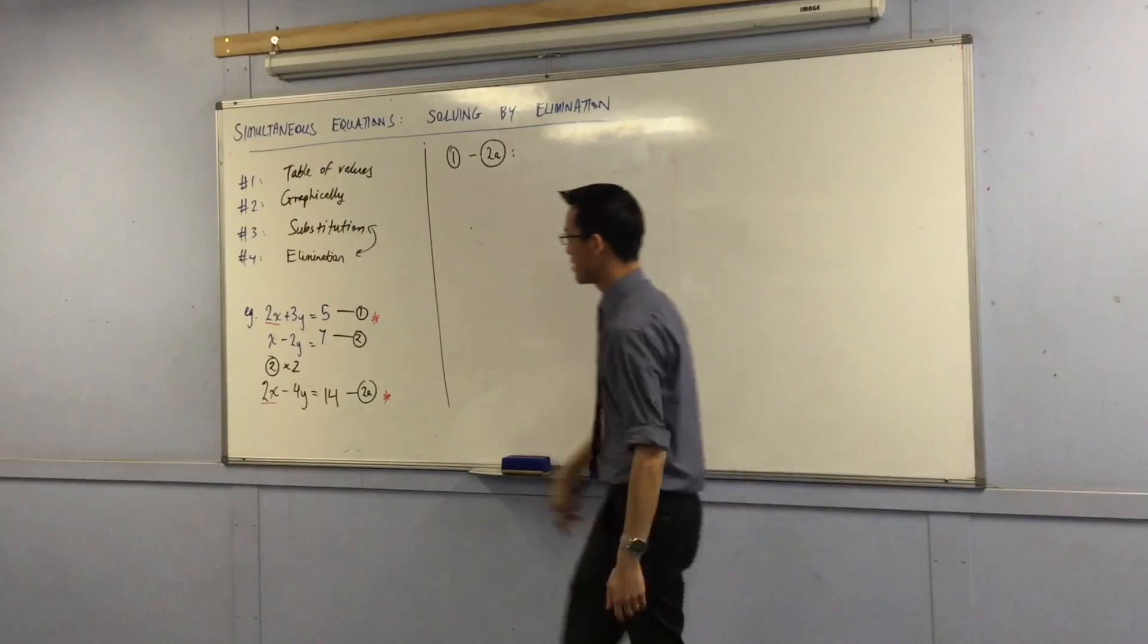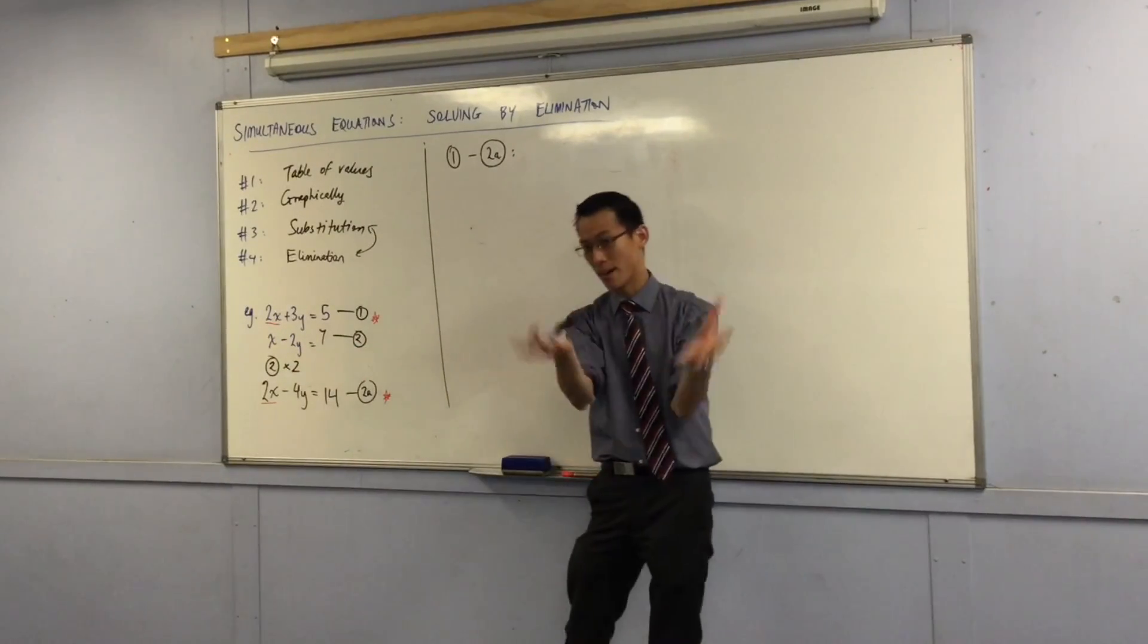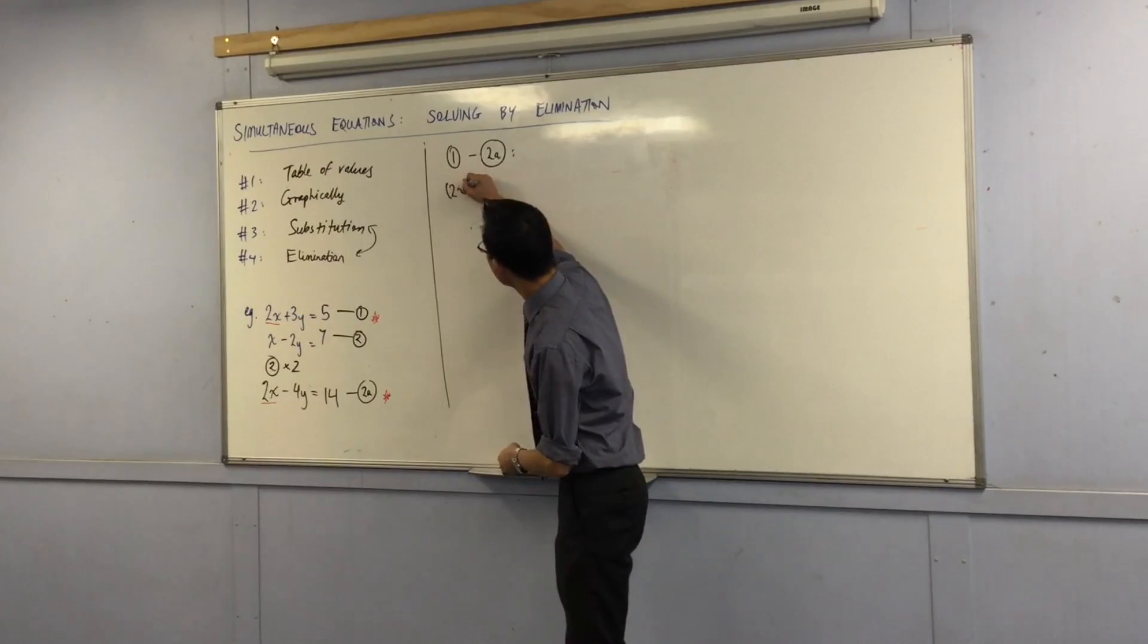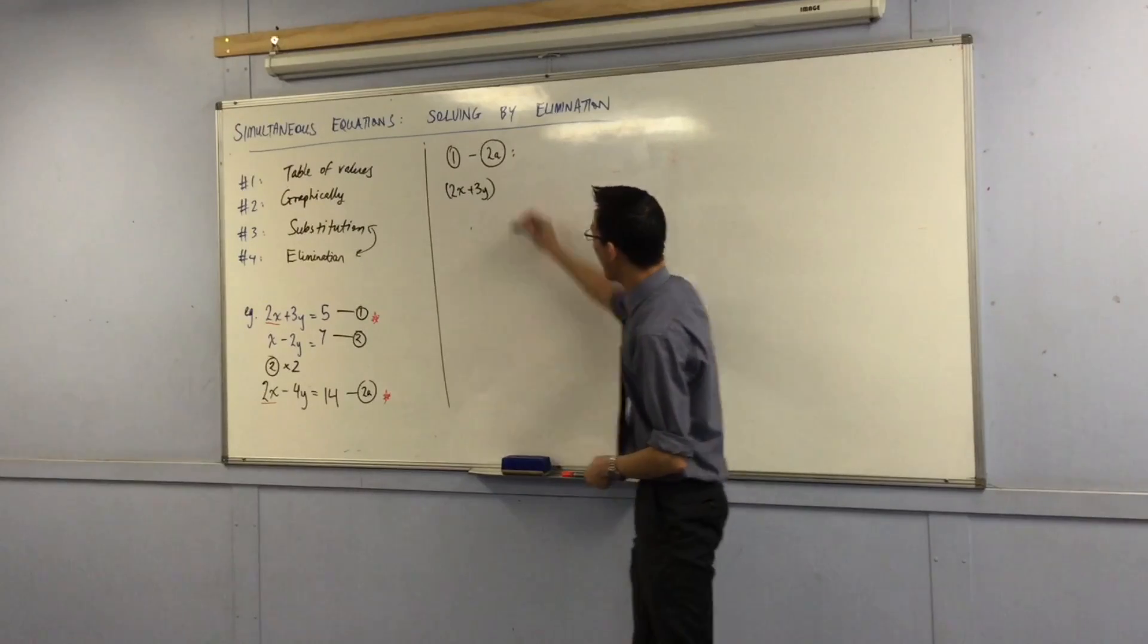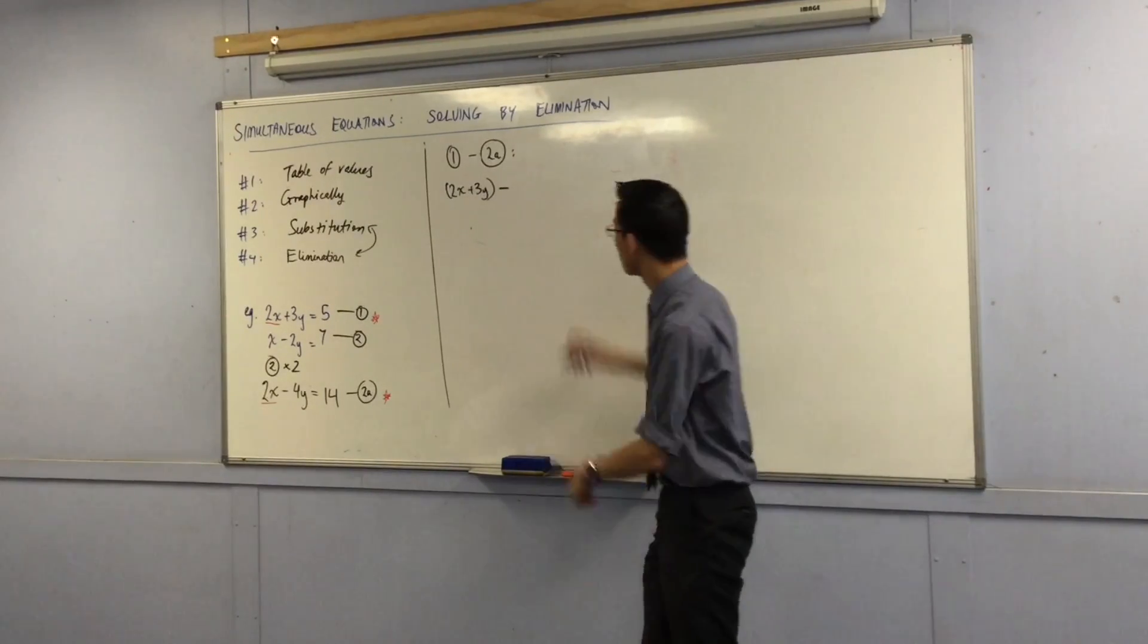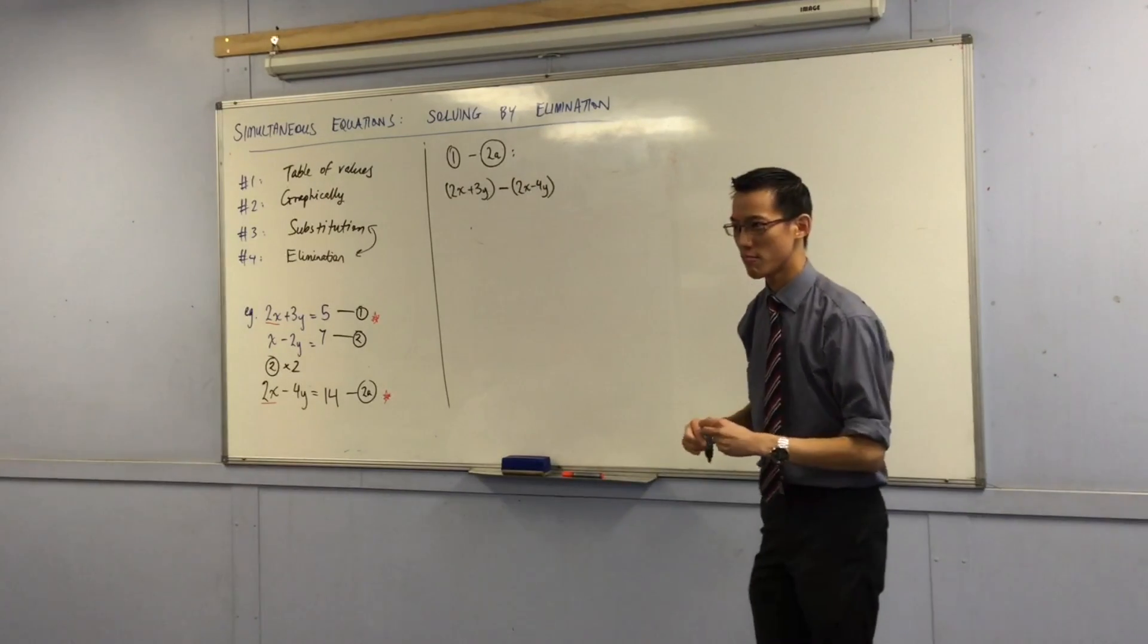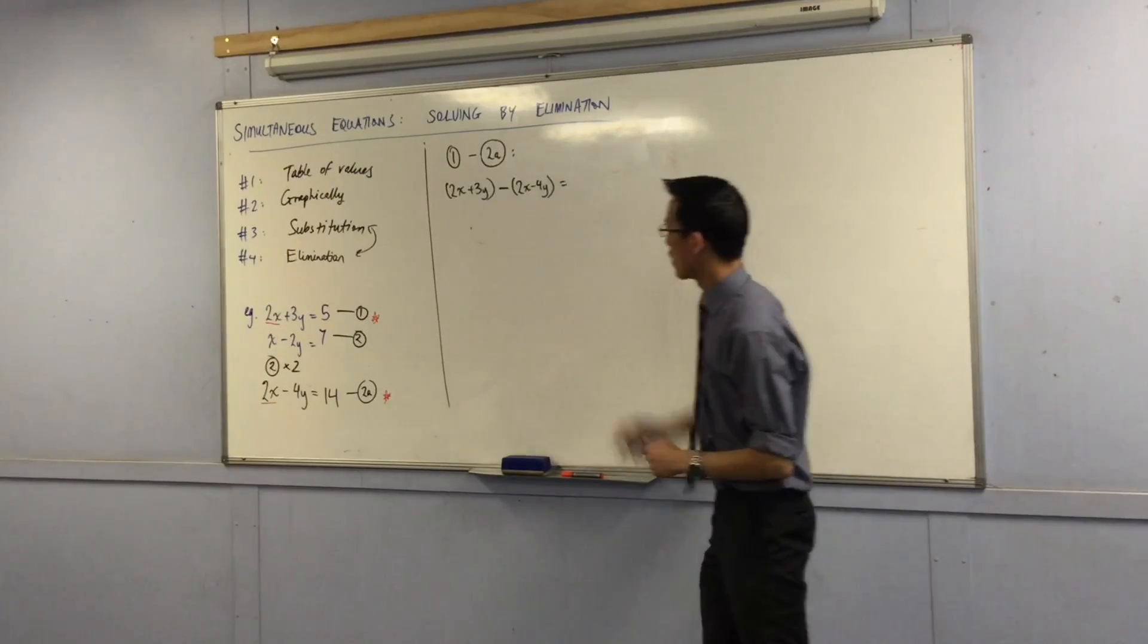Okay, now what I'm going to do is I'm going to do just like I did here. Do the left-hand side all together and do the right-hand side all together. Here is the left-hand side of equation 1. And I'm going to subtract the left-hand side of equation 2a. Like so. Are you happy with that? It's just a substitution, just a swap there. That's fine.